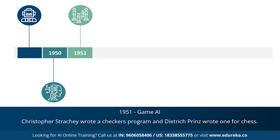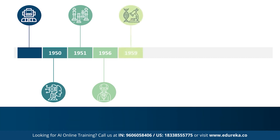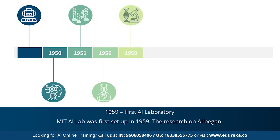These programs were later rewritten and redone in a better way. 1956 marked the most important year for artificial intelligence — during this year, John McCarthy first coined the term artificial intelligence. This was followed by the first AI laboratory, the MIT AI lab, which was set up in 1959 and was basically dedicated to the research of AI.